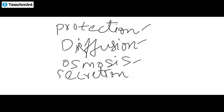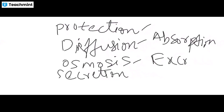Additional functions include absorption and excretion. Excretion involves processes like sweating. These are the main functions of epithelial tissue: protection, diffusion, osmosis, secretion, absorption, and excretion.